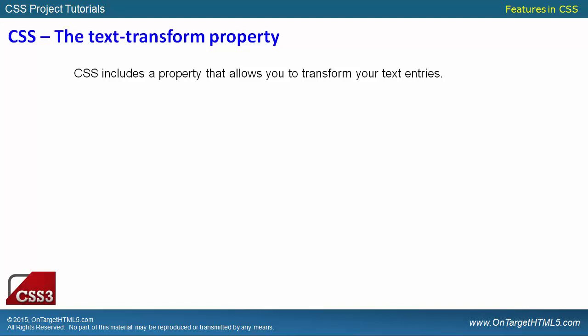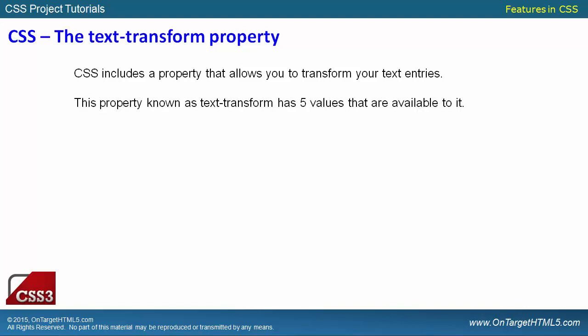CSS includes a property that allows you to transform your text entries. This property, known as text-transform, has five values available to it. They include: none, which means nothing is done with the text — it's left as entered in the HTML document; capitalize, which capitalizes the first letter of every word; uppercase, which forces every letter into uppercase; lowercase, which forces every letter into lowercase; and initial, which is the initial setting of none for that particular text-transform.